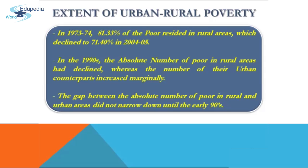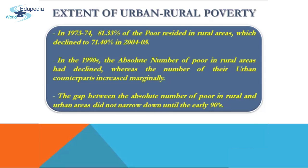The absolute number of poor in rural areas had declined whereas the number of their urban counterparts increased marginally. The poverty ratio declined continuously for both urban and rural areas. The gap between the absolute number of poor in rural and urban areas did not narrow down until the early 1990s, whereas in the case of ratio the gap remained the same until 2004-05.